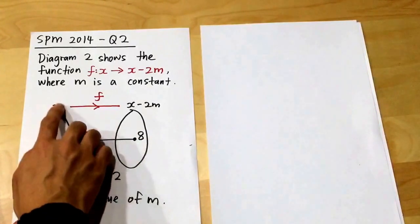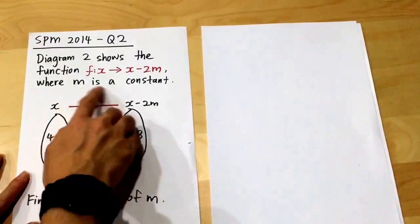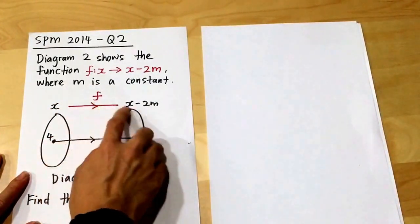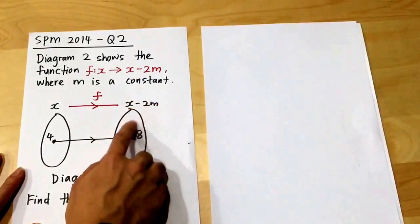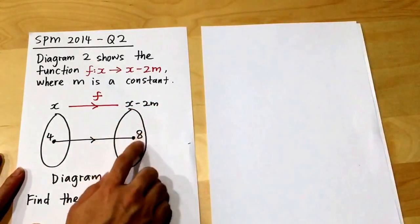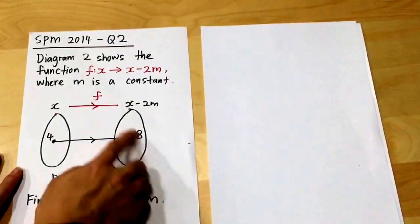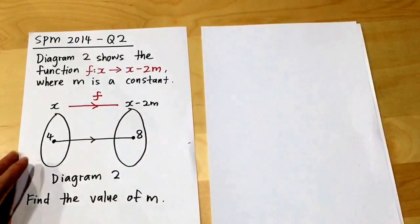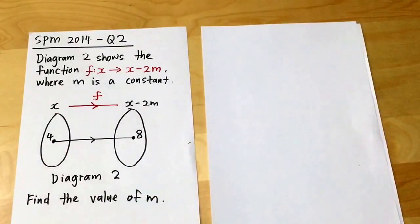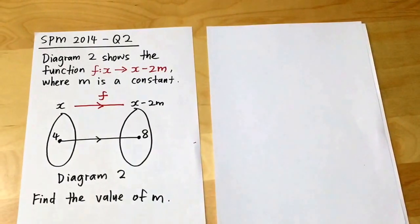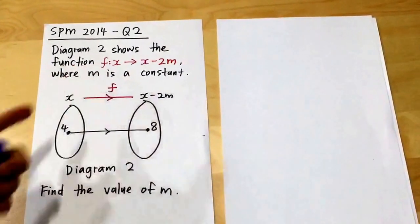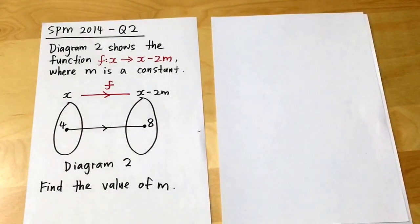This one is x. f here is a function f, and it will become x minus 2m, which is the image, actually 8. This is diagram 2. It asks you to find the values of m. You have to understand the relationships and how to read the diagram. This is very important.